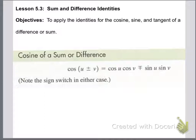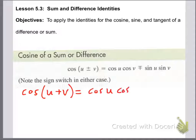For the cosine of a sum or a difference, notice how it says u plus or minus v, with a minus-plus in the middle. Cosine of u plus v is cosine u cosine v minus sine u sine v. So if it's plus inside, it's minus here; if it's minus inside, it's plus here.